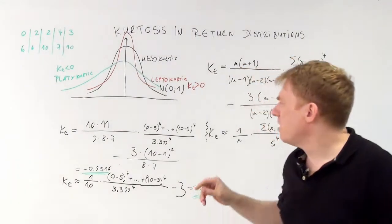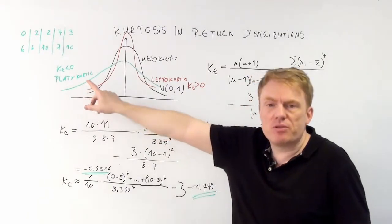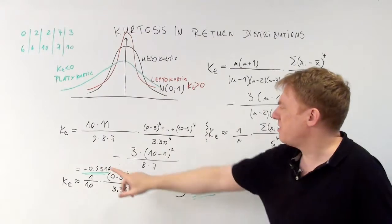Since it is negative, we can see that the return distribution we have here is platicurtic.